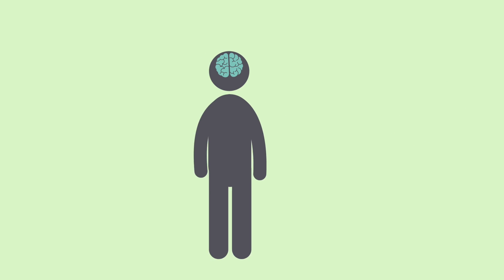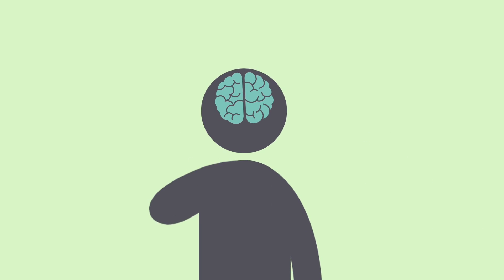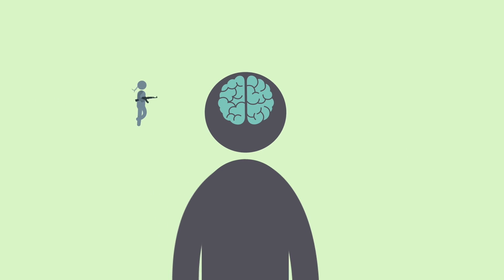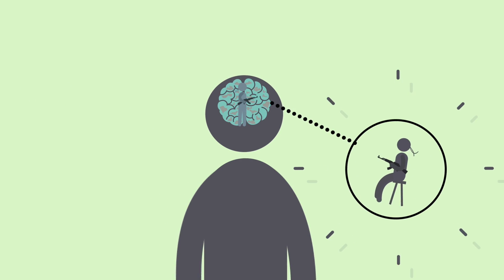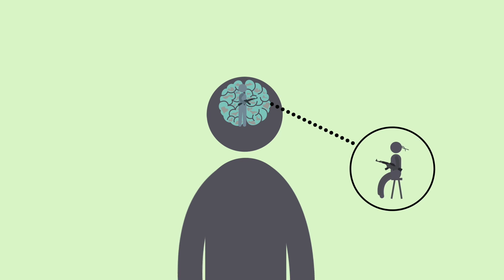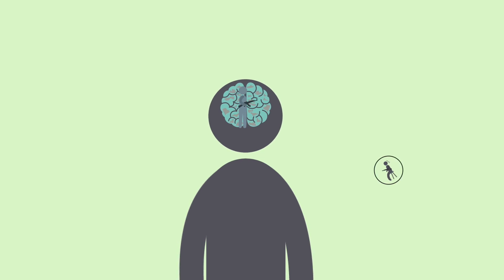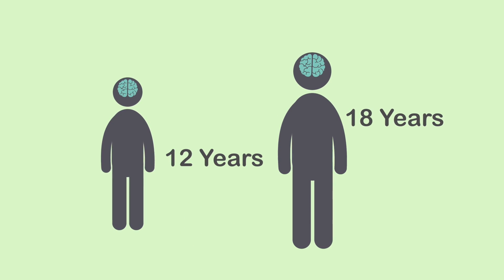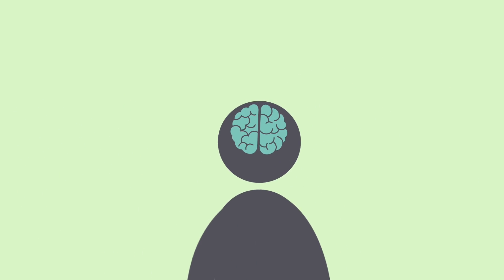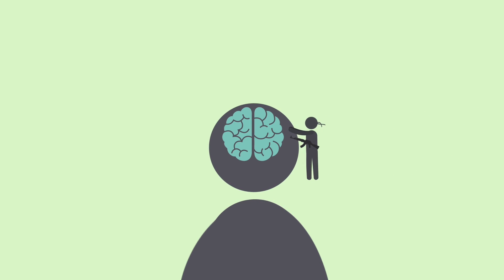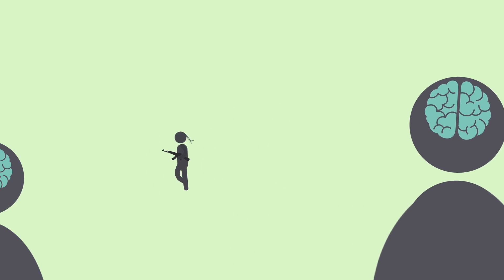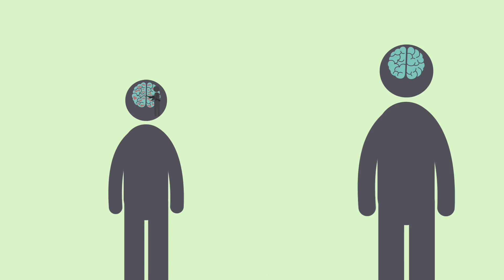In the adolescent brain, where brain tissue is more vulnerable, the hijacker is more prone to weaken the brain and plant itself as a disease. Those with substance use disorders commonly initiate first use much earlier, between 12 and 18 years old, which increases the likelihood of the hijacker taking hold.